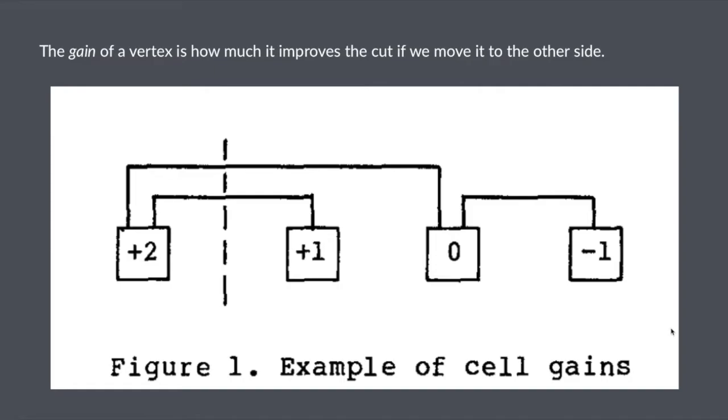So some key ideas. First off, there's the gain of a vertex. We're going to be moving one vertex at a time, and we're interested in how it's going to change the cut. So this vertex over here has plus two, because if we move it from the left-hand side to the right-hand side, we're going to reduce the cut by two. Two nets connected to it, so moving this guy over will change the cut by two.